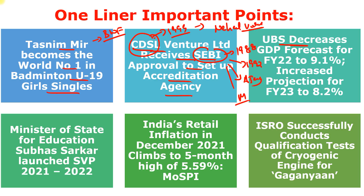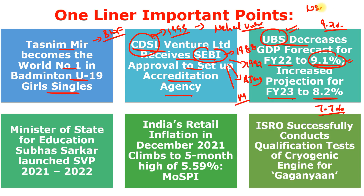UBS Securities decreased its GDP forecast for financial year 2022 to 9.1%, down from its earlier projection of 9.2%, and increased the projection for FY23 to 8.2% from 7.7%. Important projections to remember: NSO projected 9.2%, World Bank projected 8.3%, and Reserve Bank of India projected 9.5% for financial year 2022.